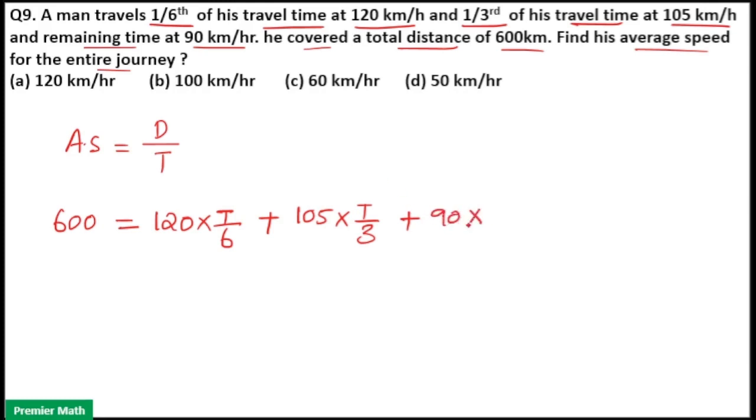And he traveled remaining time at 90 km per hour. So speed is 90 and time is remaining time. Here T/6 plus T/3 is T/2. So the remaining time is T/2. T minus T/2 is T/2.